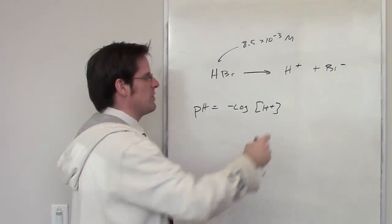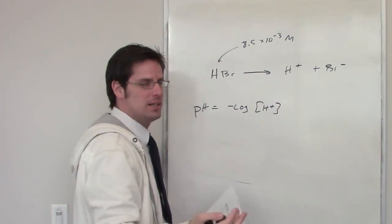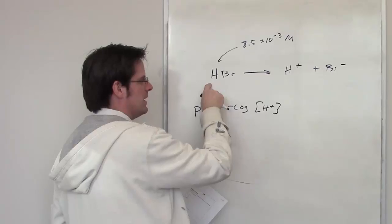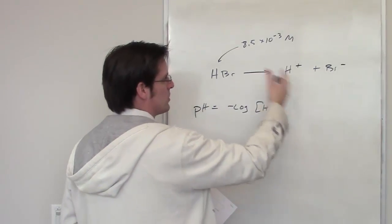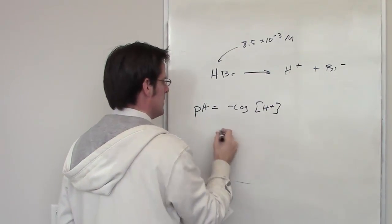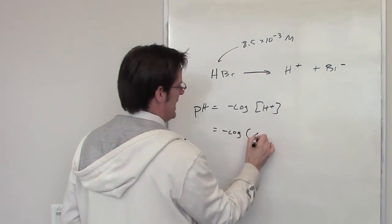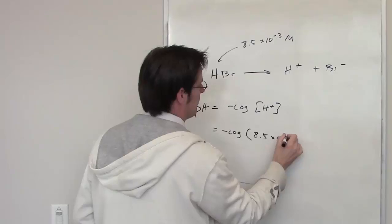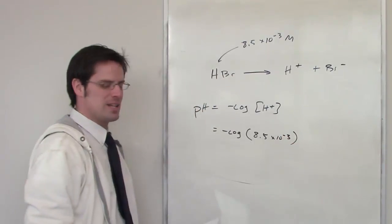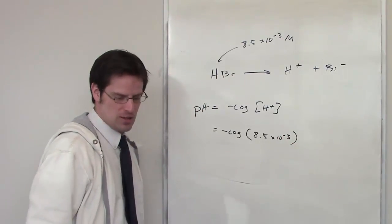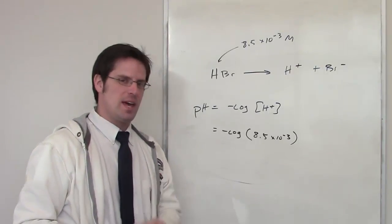So what will the concentration of H+ and Br- now be? Well, it's going to be the same because there's a 1 to 1 to 1 ratio, stoichiometrically, of HBr to these products. What that means is that pH is going to be equal to the negative log of 8.5 times 10 to the negative 3. If you throw that into your calculator, that will give you the pH. I'll let you do that on your own.